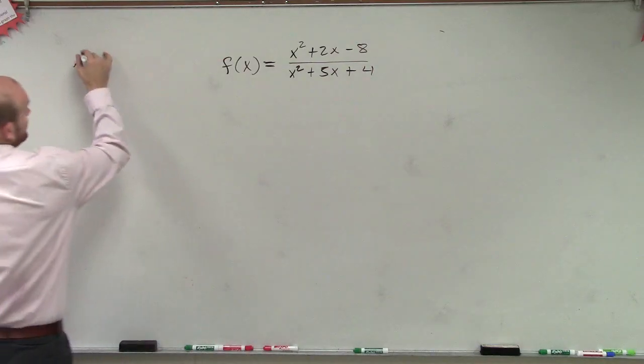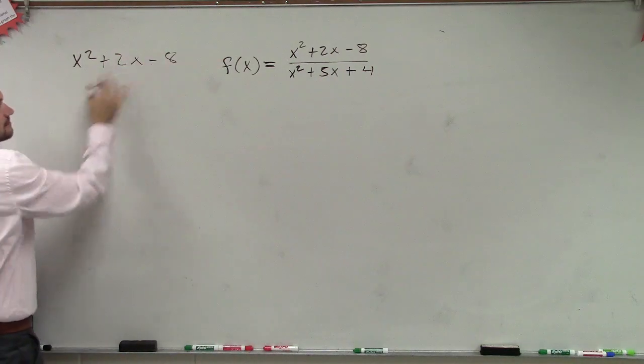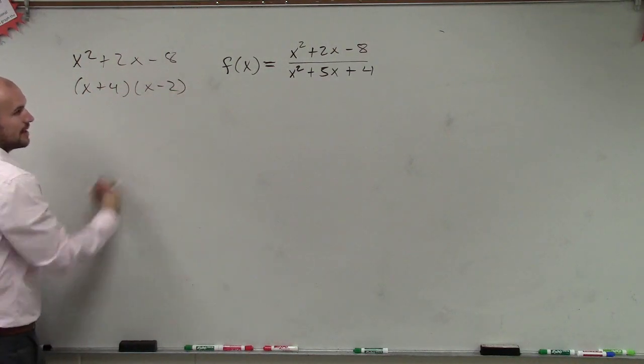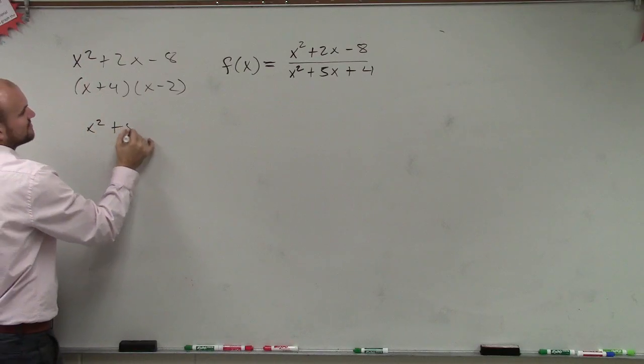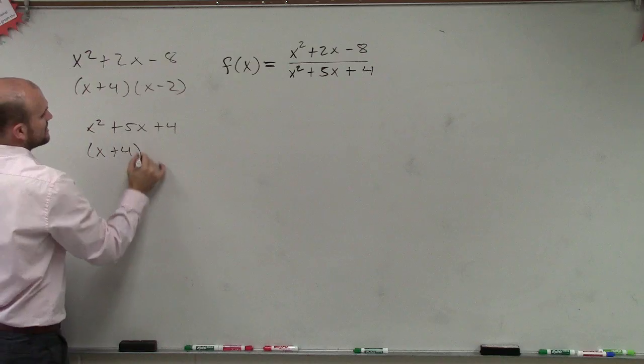So I'm just going to write them over here, and let's see how I can factor these. So this can factor to x plus 4 times x minus 2. This one, x squared plus 5x plus 4, can be factored into x plus 4 times x plus 1.